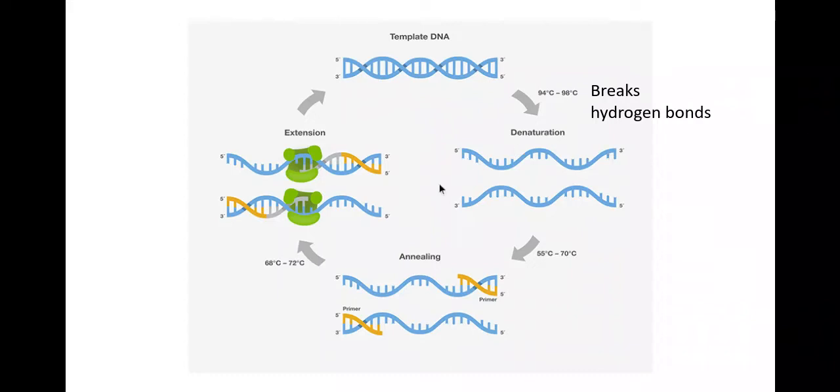So once I've got my separate strands of DNA due to hydrogen bonds breaking, I'd then cool the solution slightly. The reason why I would cool the solution slightly is so that I have a primer that can be added on and join onto my base sequence that I want to replicate.